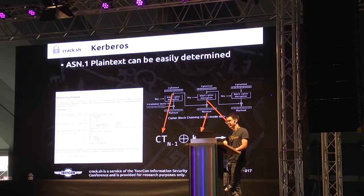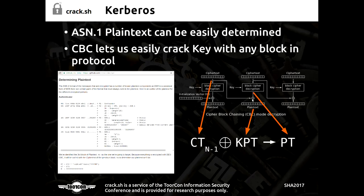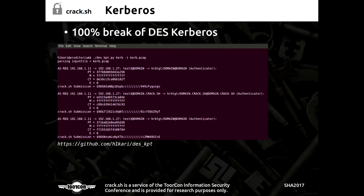This works because with CBC, the previous block's cipher text gets XORed with your plaintext — and both of those values are known, so you can use that to crack any block in the chain. Also on GitHub, you can take the Python script and point it at a PCAP file. If it's using DES-CBC, it'll automatically figure out the known plaintext and create a submission token to crack the DES key.